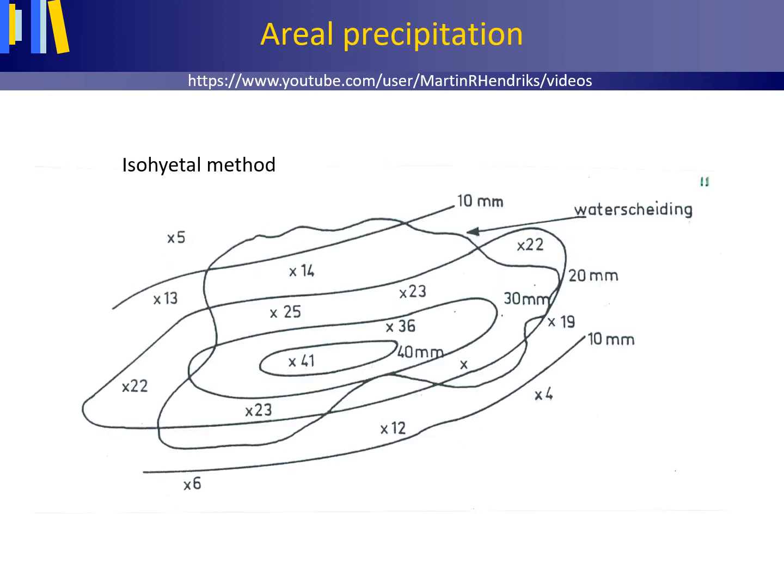When precipitation is spatially highly variable, such as in mountainous areas, or if a high accuracy of estimate is required, more rain gauges are needed and their positioning in the landscape becomes more important. When using the isohyetal method, lines with the same precipitation depth, so-called isohyets, are constructed.